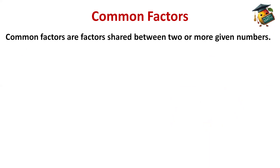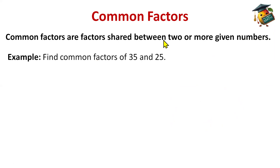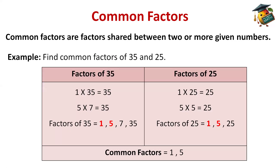Now, common factors. Common factors are the factors shared between two or more given numbers. Let's see an example: find common factors of 35 and 25. We'll first find the factors of 35, then the factors of 25, and whatever is common will be the common factors. Factors of 35 — start from 1: 1 × 35 = 35. 2 table: no. 3: no. 4: no. 5: yes — 5 × 7 = 35. 6: no. 7: yes — 7 × 5 = 35. Repetition occurs, so we stop. Factors of 35 are 1, 5, 7, and 35.